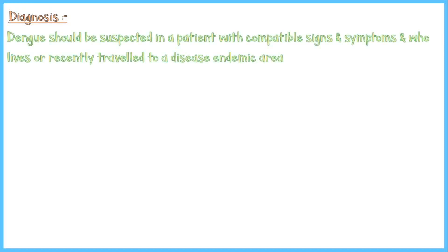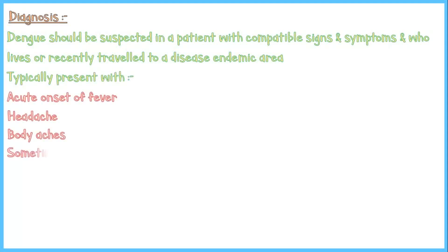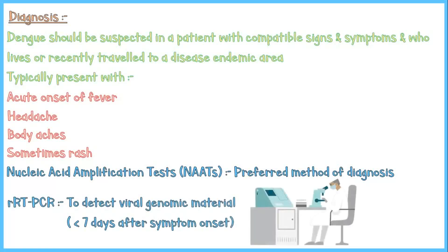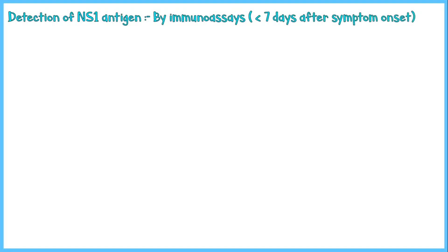Early detection of dengue infection is extremely important to prevent hypovolemic shock. Dengue should be suspected in a patient with compatible signs and symptoms — acute onset of fever, headache, body aches, and sometimes rash — who lives in or recently traveled to a dengue endemic area. Nucleic acid amplification tests, specifically real-time reverse transcriptase PCR, are the preferred diagnostic method and must be done within the first week of symptom onset. Detection of viral NS1 antigen by immunoassays is another reliable method, also performed within the first week of illness.